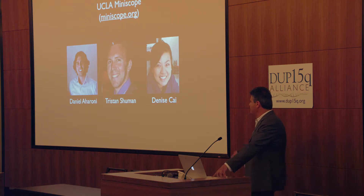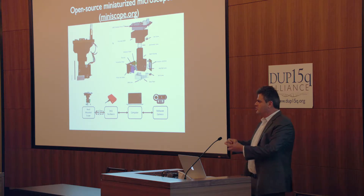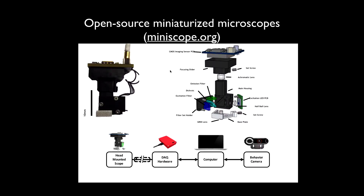This was done mainly by Daniel Laaroni in collaboration with Tristan Schumann and Denise Kai, who are now assistant professors at Mount Sinai. Daniel is now an assistant professor at UCLA; he was a postdoc in my lab. You can imagine taking your big epifluorescent microscope, shrinking it down, and putting it on the head of the animal. Instead of a big objective you have a tiny GRIN lens, little filters, and instead of a camera on top you have a little cell phone camera. The animals are freely behaving and you can do calcium imaging reporting the activity patterns of — here in the hippocampus — six or seven hundred cells.